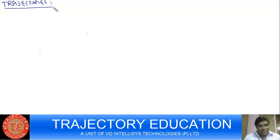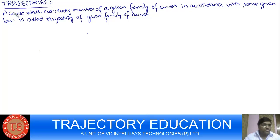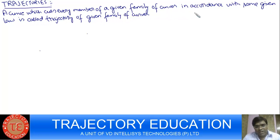This is very important also. So first of all I will write the definition of trajectory. What is meant by trajectory? The definition goes like: a curve which cuts every member of the given family of curves in accordance with some given law is called the trajectory of the given family of curves.